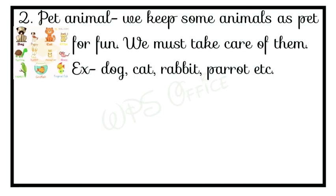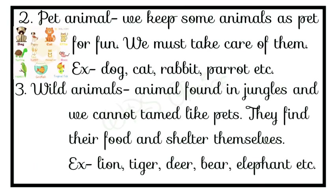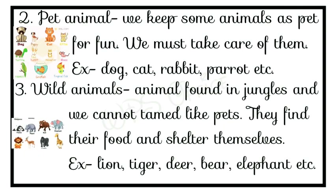The third type is wild animals. Animals found in jungles that we cannot tame like pets are called wild animals. They find their food and shelter themselves. For example, tiger, deer, panda, bear, elephant, and fox.